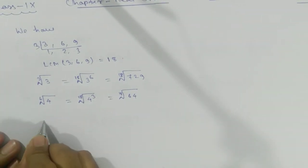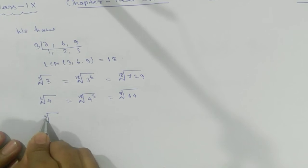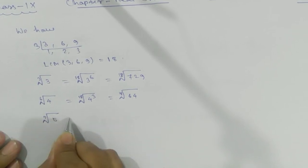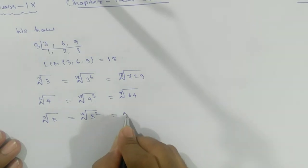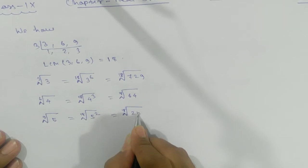The last one: 9th root of 5. The power would be 2 and we'll get 18th root of 25.